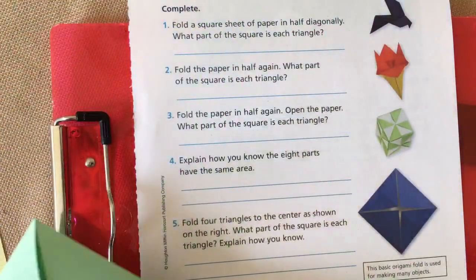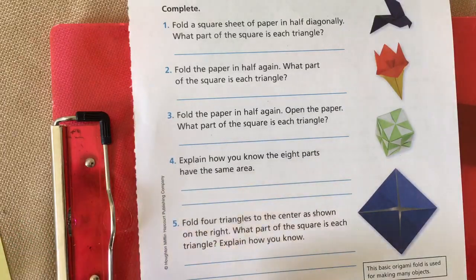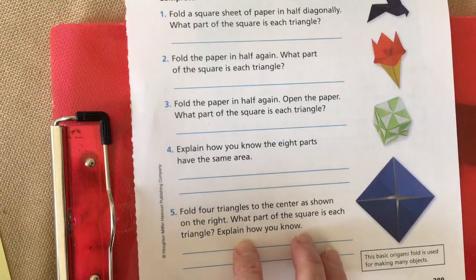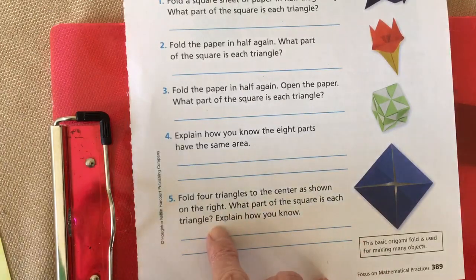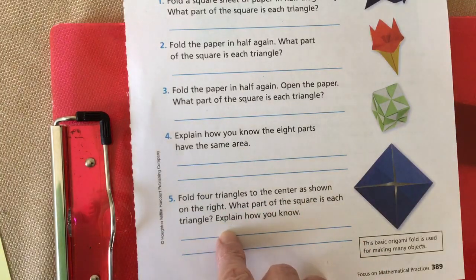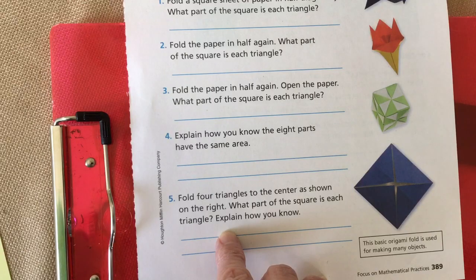Let's see. What does it say? What part of the square is each triangle? Explain how you know. Explain how you know.